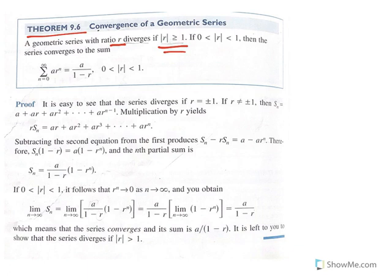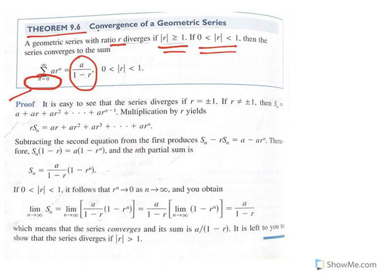If the absolute value of the common ratio is between 0 and 1, the geometric series converges, and we also know the value it converges to from the formula. One important note: the formula applies when the index starts at n equal to 0. If the index starts at 1, you are missing the zeroth term and must subtract it from the formula result.